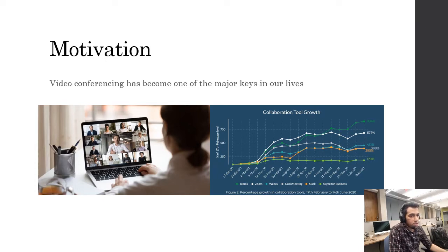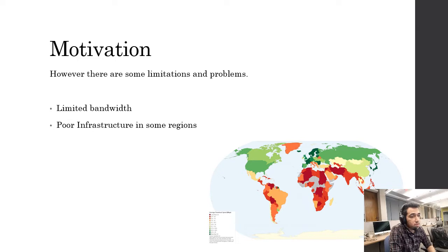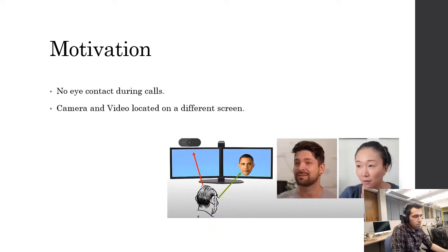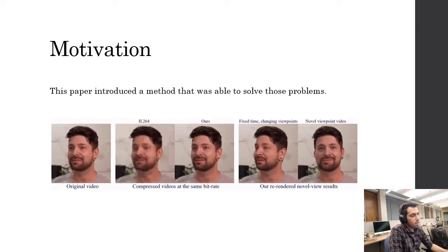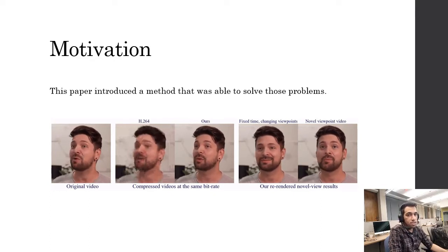In the past years, due to the pandemic and COVID, videoconferencing has played one of the major roles in our lives. Statistics show that the usage of these applications increased significantly. However, there are some limitations: limited bandwidth, poor infrastructure in some regions, no eye contact during calls, and the camera and video being located on a completely different screen. For example, right now while presenting, you can notice I'm not looking directly into the camera. This paper solved most of these problems, and we are going to dig into the details to see how they exactly solved those problems.